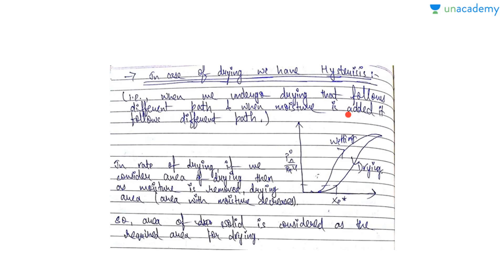In drying, we have hysteresis — which you may have studied in the magnetic field context in physics. Here, hysteresis is observed because wetting and drying follow different paths. Suppose you are wetting a solid versus drying a solid — these are never the same case. Wetting follows one path to reach a particular composition, while drying follows a different path. So wetting and drying both follow different paths.